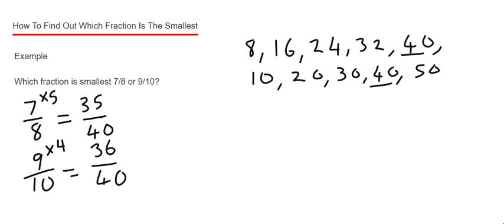So as you can see, the first fraction is the smallest because it's 35 out of 40 whereas the other one is 36 out of 40. So that means 7/8 would be your smallest fraction.